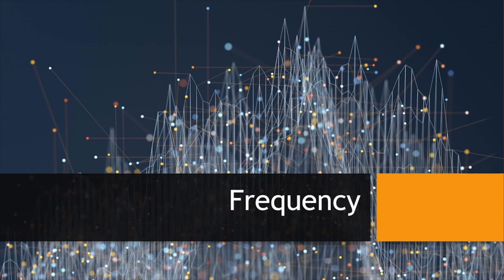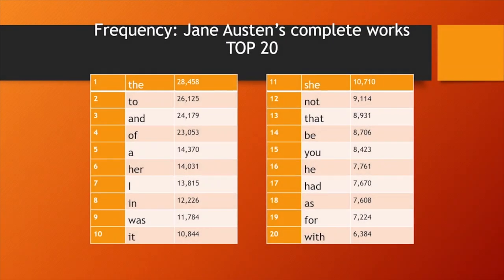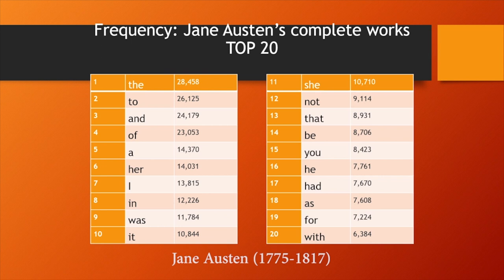Let's have a look now at an example of frequency. This is a frequency list of the words which occur in the complete works of the English author Jane Austen. We see in this list the top 20 most frequent items, and they are all small grammatical words — quite predictably the definite article, prepositions, conjunctions, pronouns, forms of auxiliary verbs and so on — so it doesn't tell us much about Jane Austen's style.